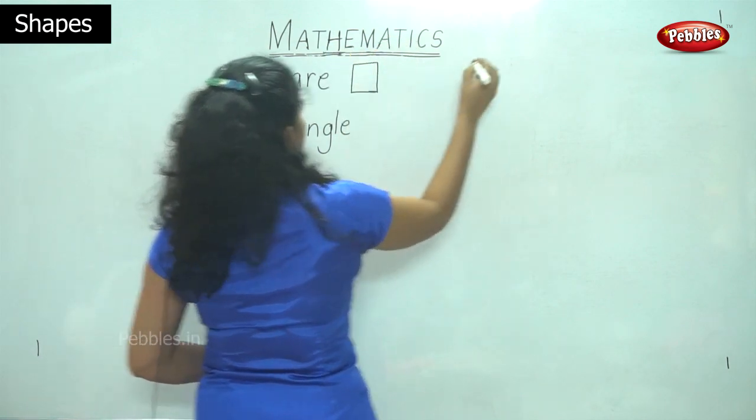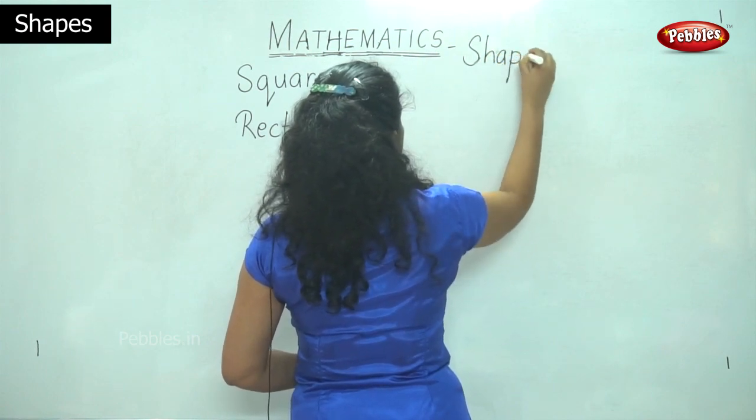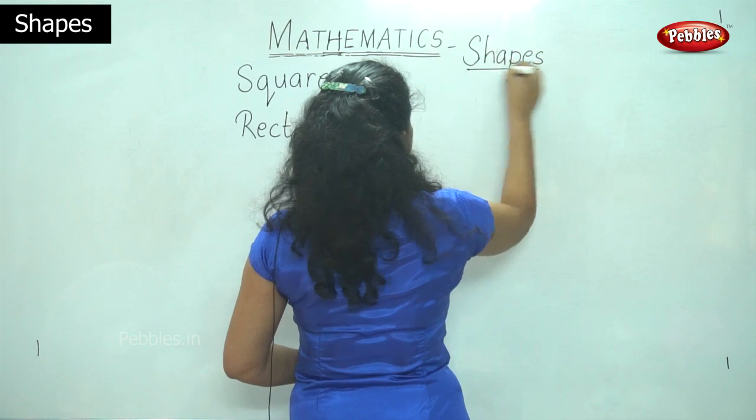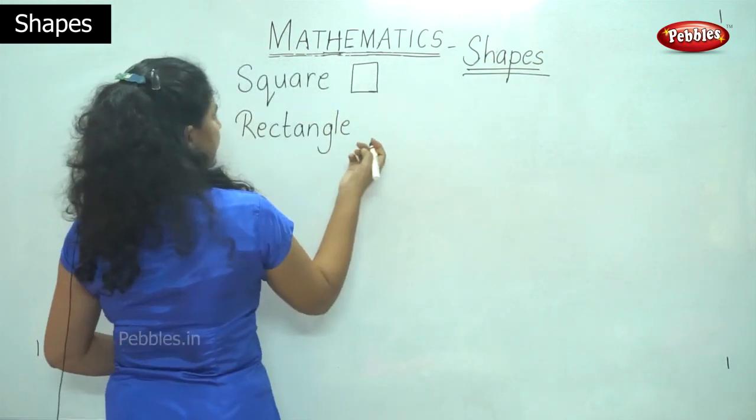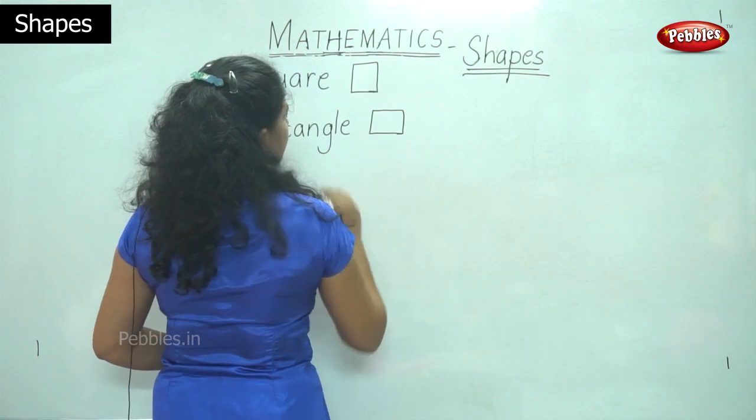So our topic today is different shapes. So it is the square, the rectangle which has the opposite sides are equal.